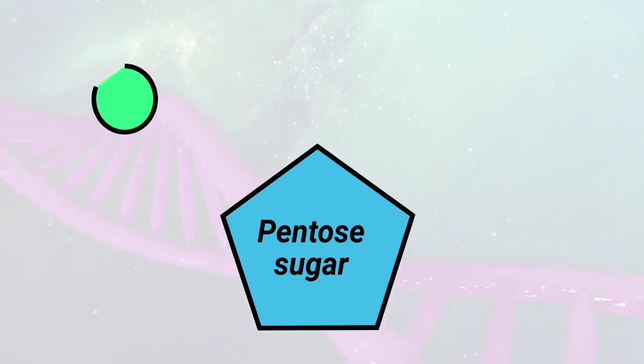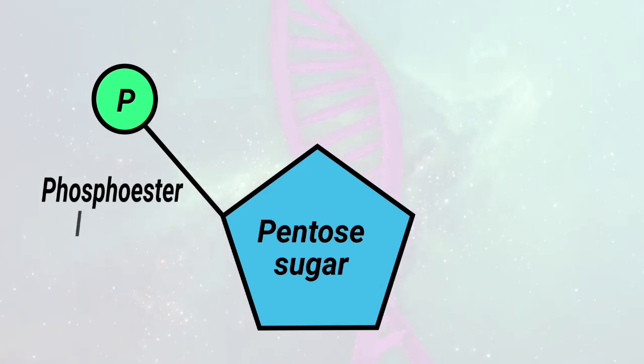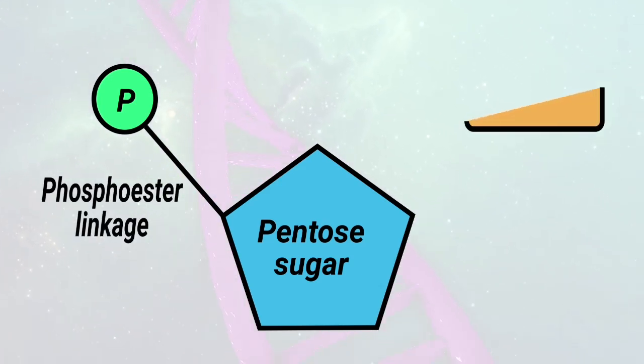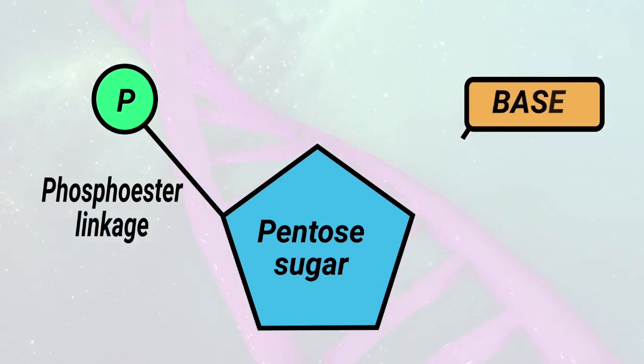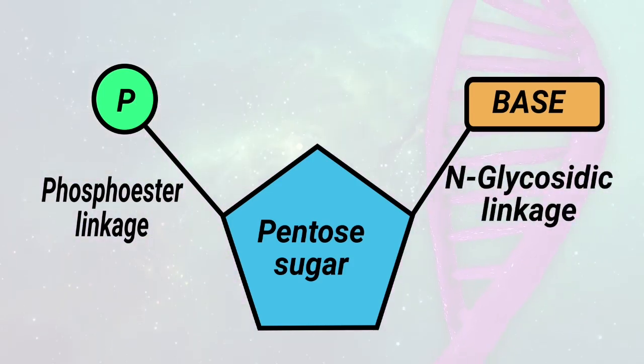A pentose sugar is linked to a phosphate group through a phosphoester linkage to form a nucleotide. A nitrogenous base is linked to the pentose sugar through an N-glycosidic bond.